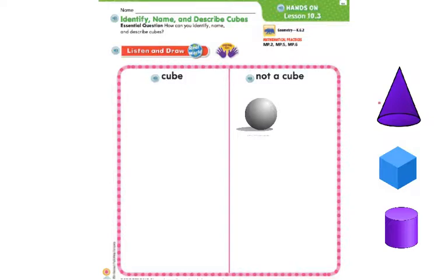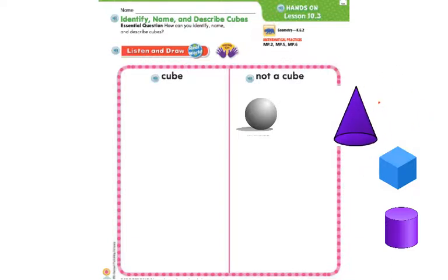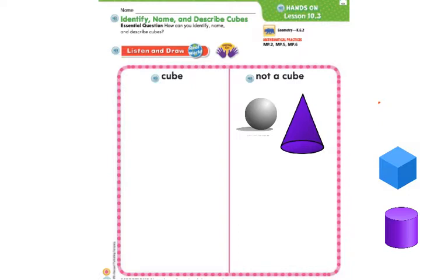Our next shape right here — is this a cube? We see a flat surface, but it also has curves. And we know that cubes don't have curves. So that is a cone, not a cube. Let's move it to the not-a-cube side.